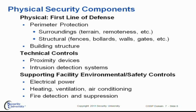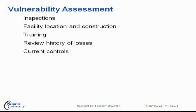We also need to look at more attributes of the physical first line of defense. This would include perimeter protection, how you structure your buildings, and technical controls used in the physical security complex, like proximity devices and intruder detection systems. We also need to take a look at how we ensure continuous reliable power, and how we stop fires and other emergencies from affecting our environment.